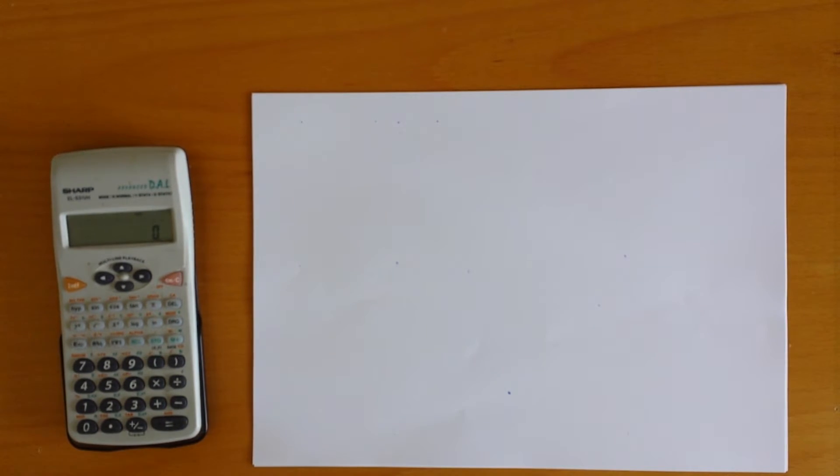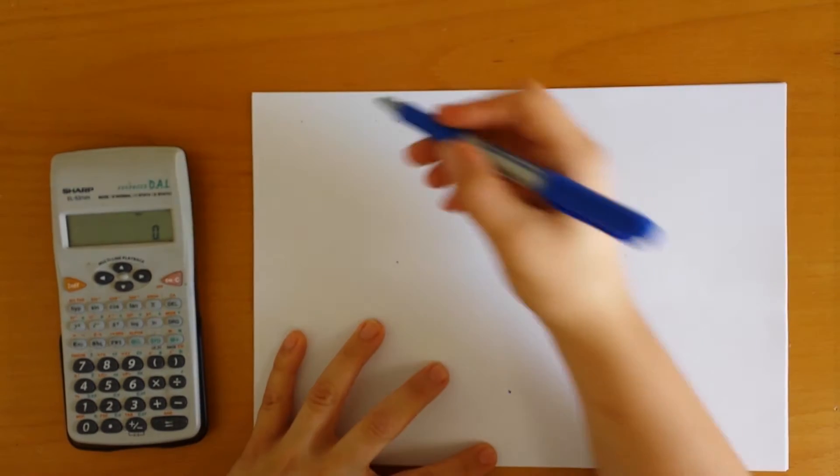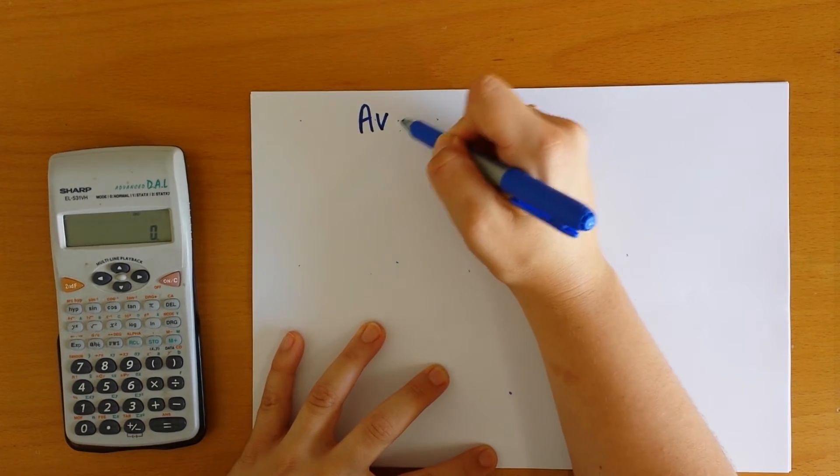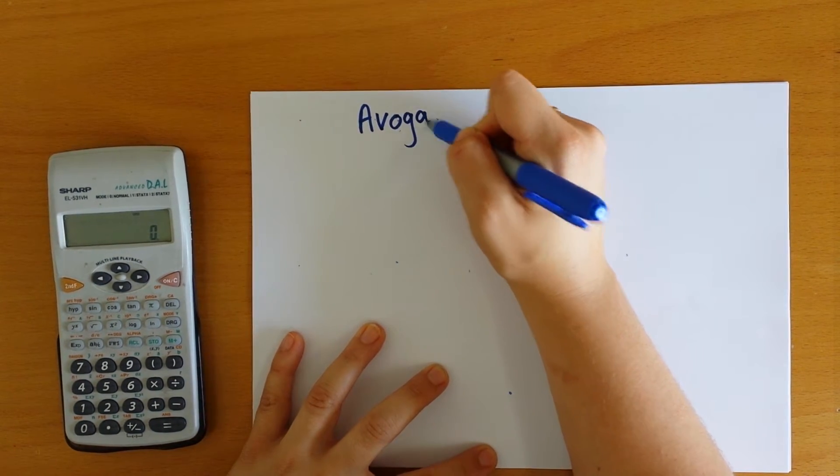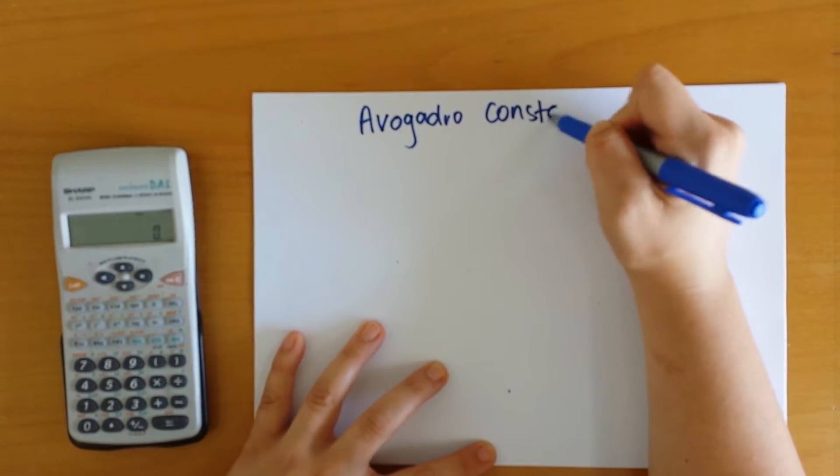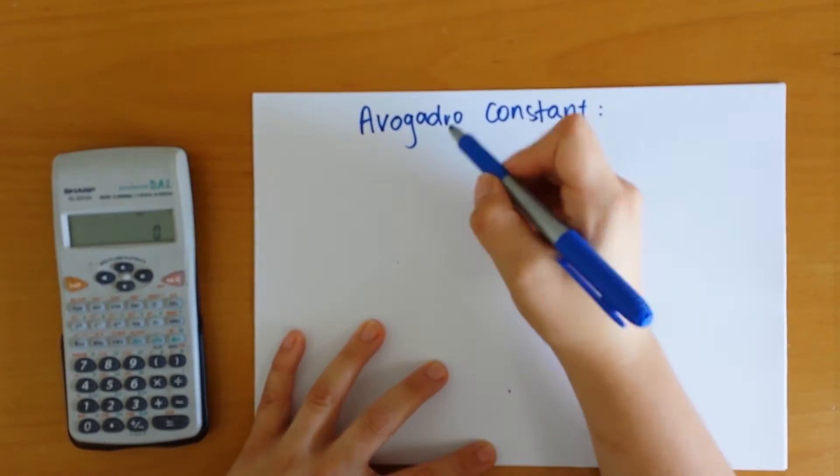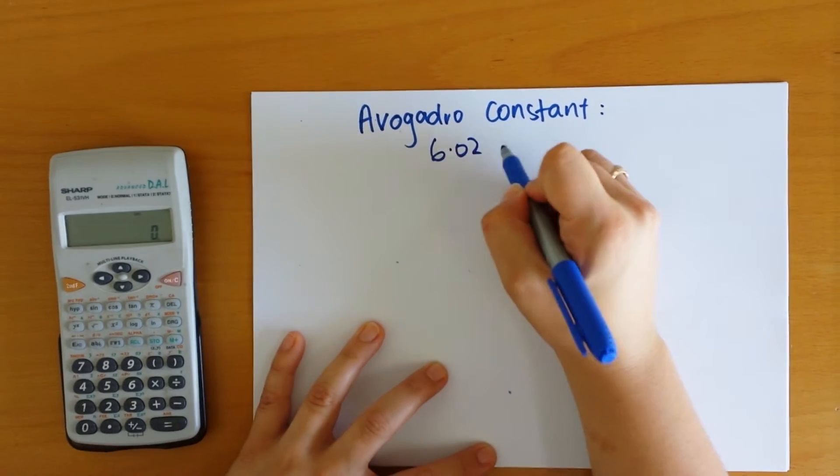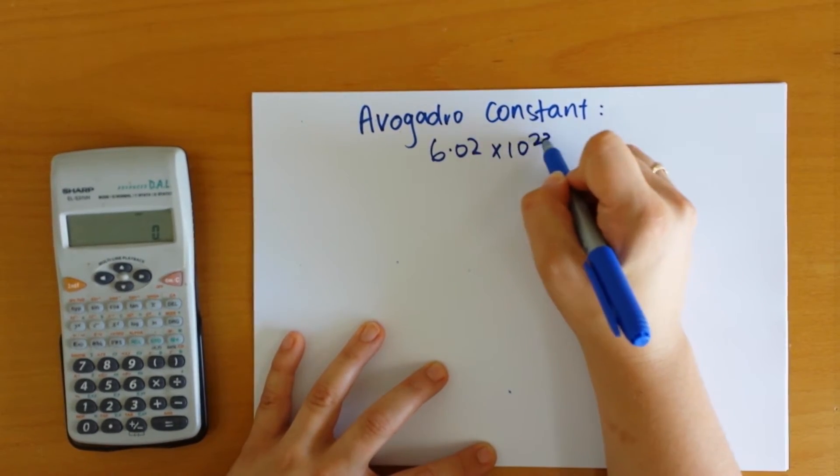So what we have been looking at on previous screens is this idea of the Avogadro constant. And the Avogadro constant is 6.02 times 10 to the 23.